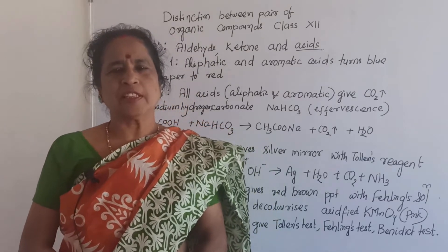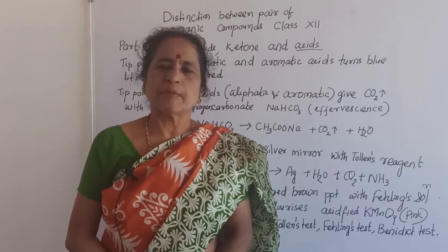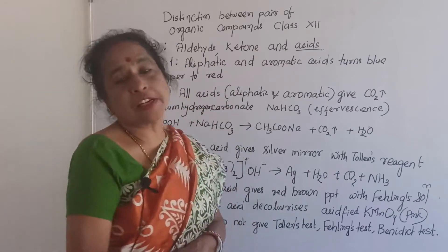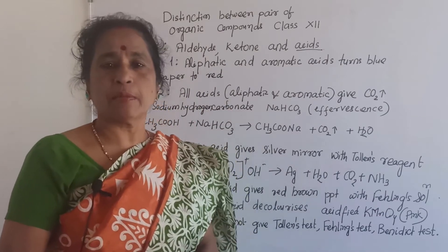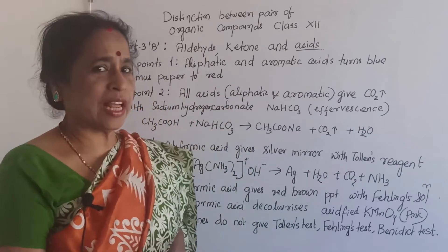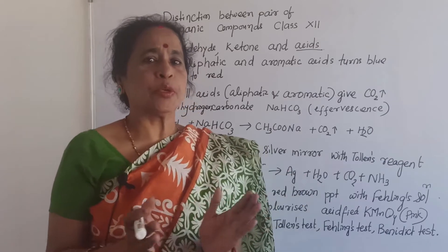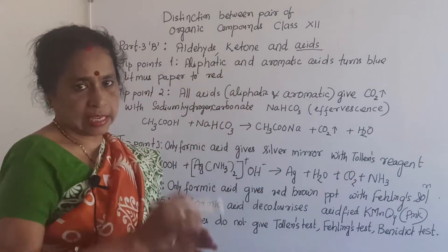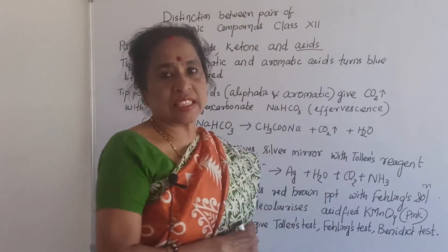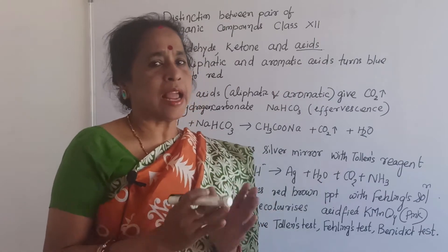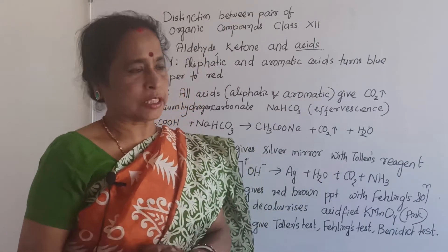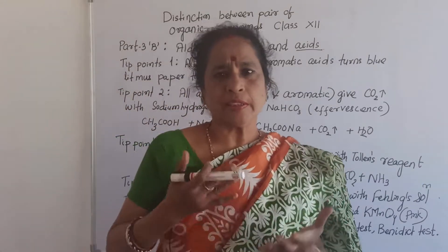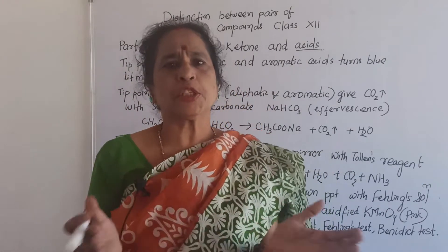Welcome to my chemistry channel, Short and Sweet in Chemistry. Today's topic is the distinction between pairs of organic compounds. Here I will explain how to distinguish between two acids, mainly aldehyde, ketone, and acid. What are the main chemical tests by which we can distinguish between two pairs of organic compounds?